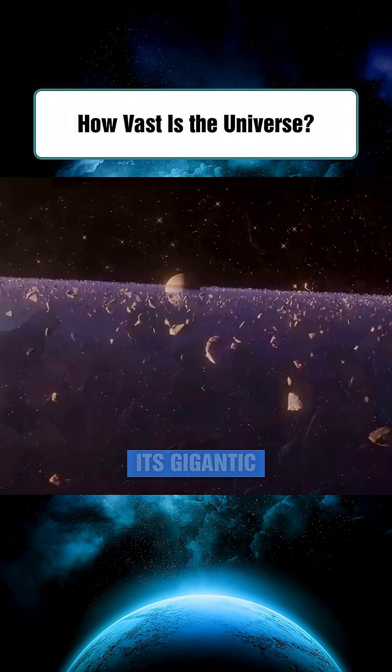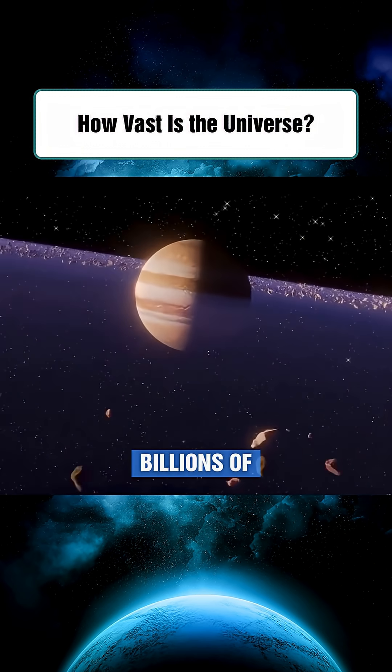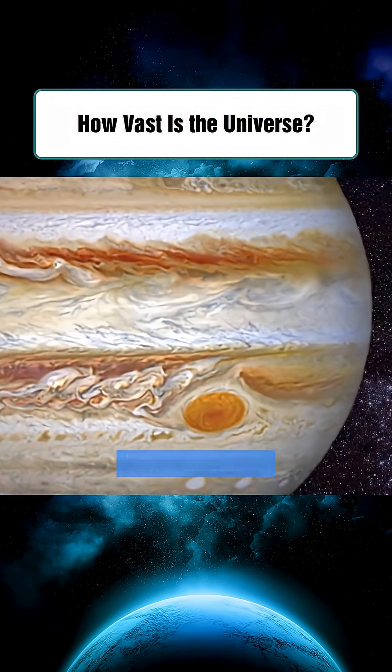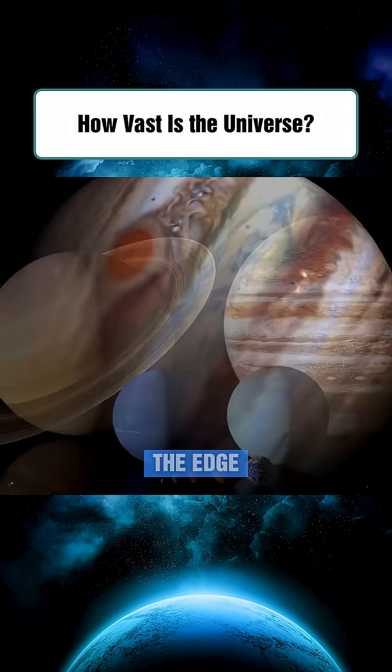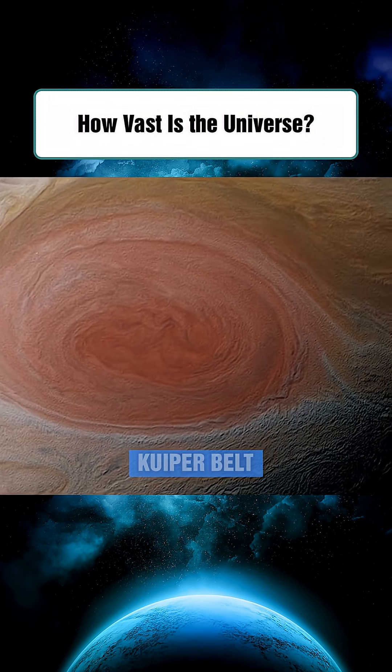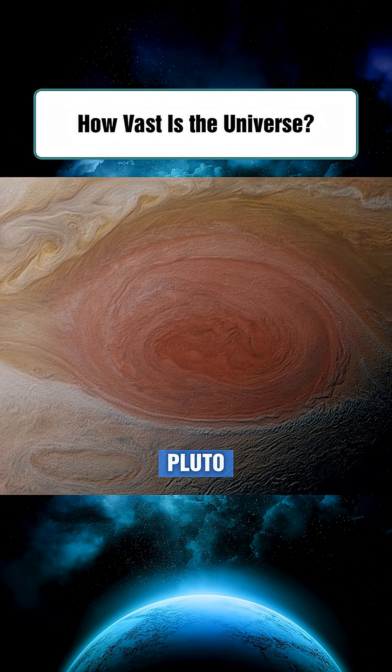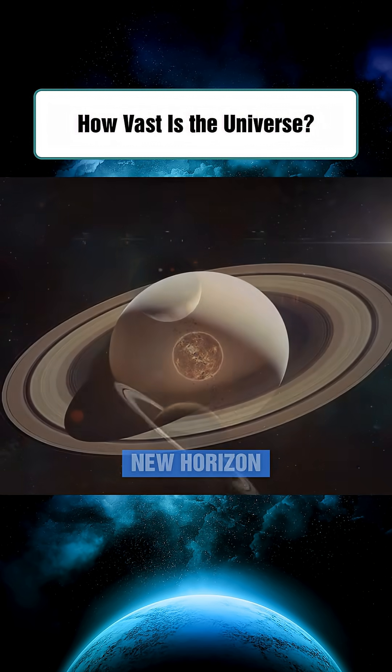Saturn stands out with its gigantic rings made of billions of tiny ice fragments. Further away lie Uranus and Neptune, massive ice giants on the edge of the solar system near the Kuiper Belt and the dwarf planet Pluto, once visited by the Voyager and New Horizons spacecraft.